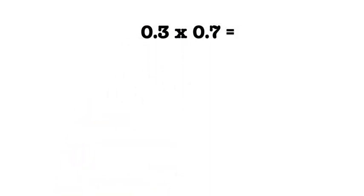Our first problem is 3 tenths times 7 tenths. When multiplying decimals using a model, we're going to start by converting our decimals into fractions. The way you read a decimal is the way you write the fraction.